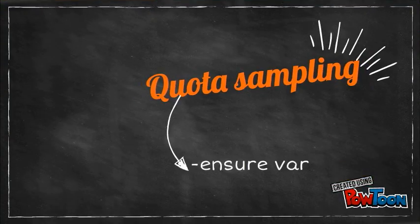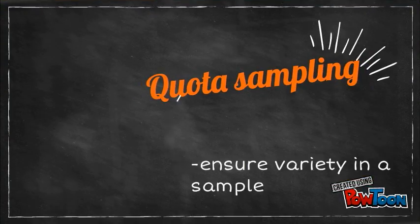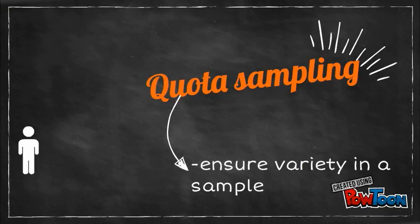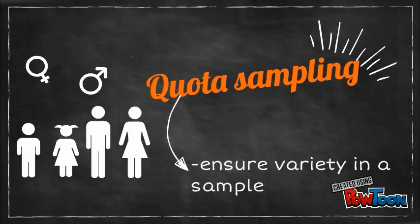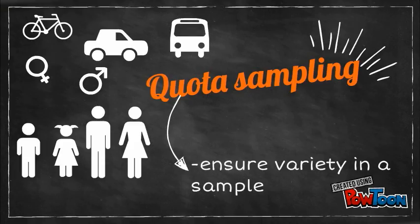Quota sampling, on the other hand, allows researchers to ensure that there is some variety in the sample. For example, in a research, we have representatives from different age groups and gender — male and female — and also respondents who use bicycle, car, or public transport to get around.